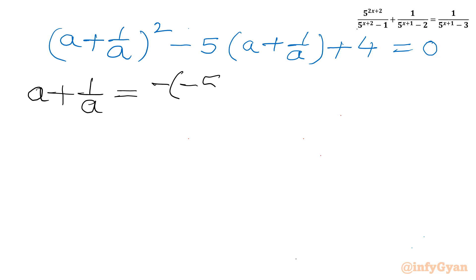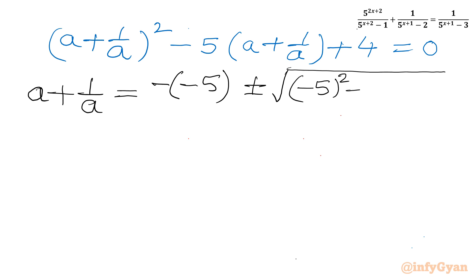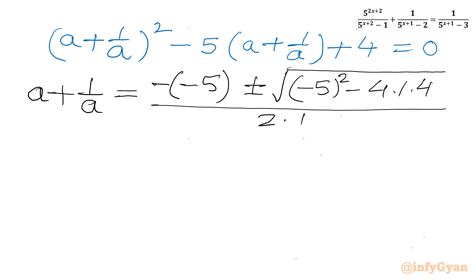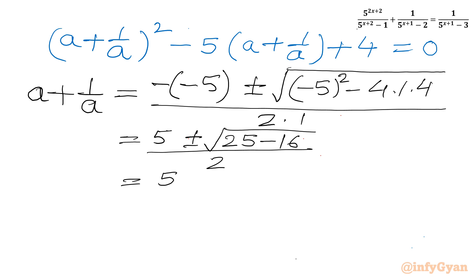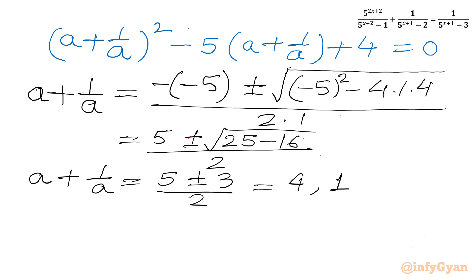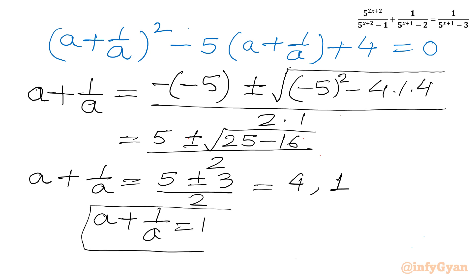Applying the quadratic formula with b = -5 and c = 4: a + 1/a = [5 ± √(25 - 16)] / 2 = [5 ± √9] / 2 = [5 ± 3] / 2. So a + 1/a = 8/2 = 4, or a + 1/a = 2/2 = 1.